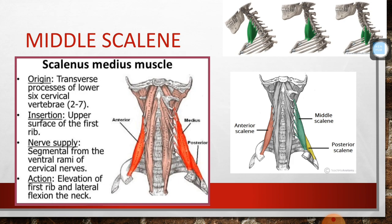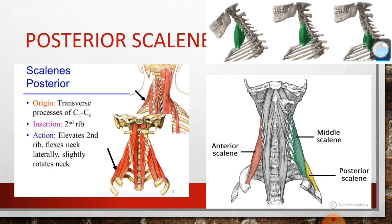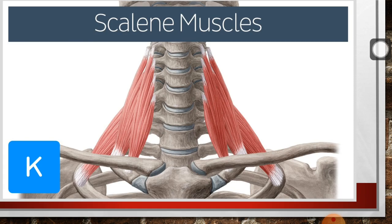Middle scalene muscle: origin from the transverse processes of the lower six cervical vertebrae, and insertion into the upper surface of the first rib. Posterior scalene: origin from the transverse processes of C4 to C6, and insertion into the second rib. These are the three scalene muscles — anterior, middle, and posterior — and you must know their origins and insertions.